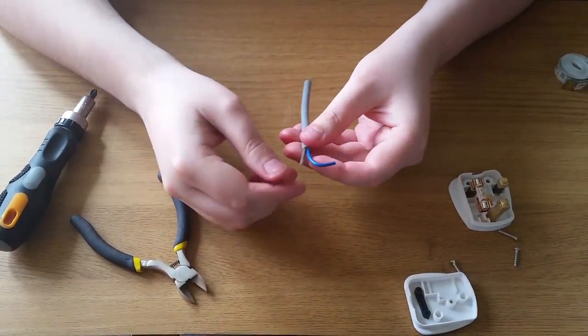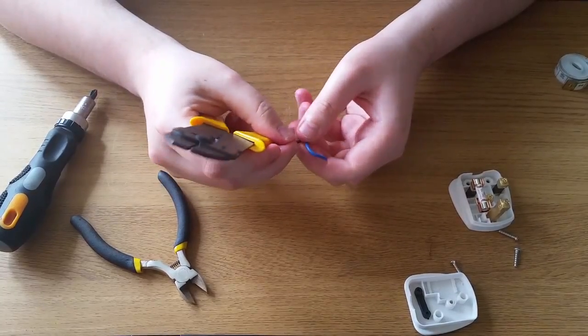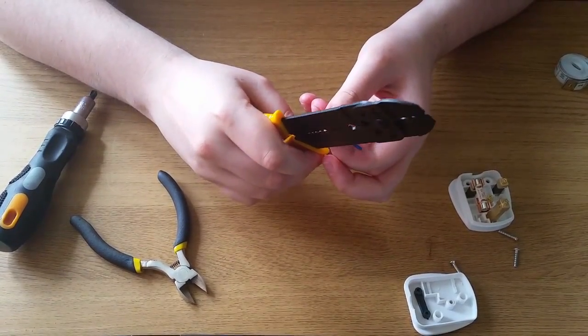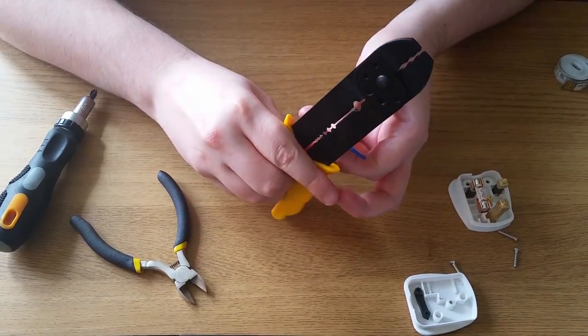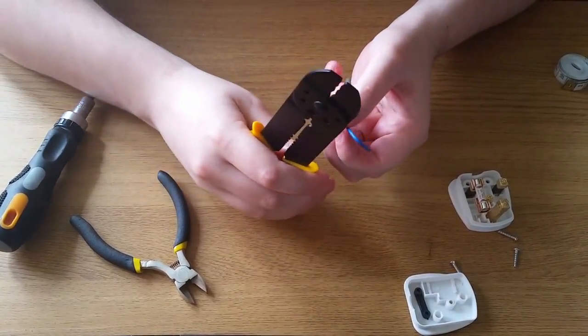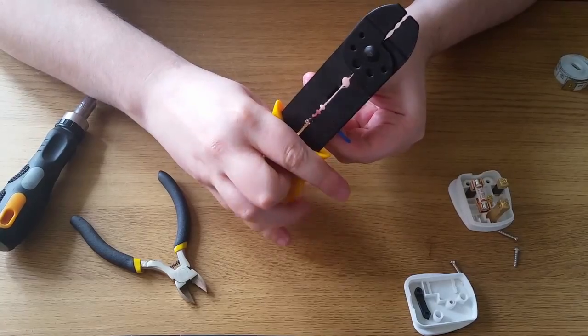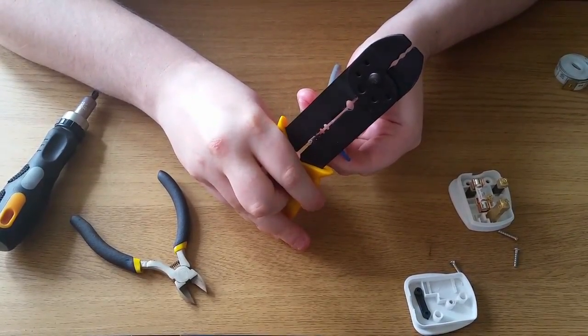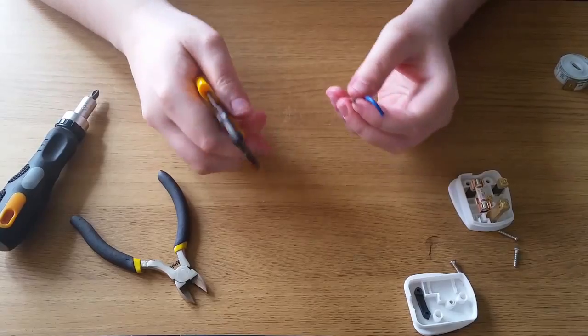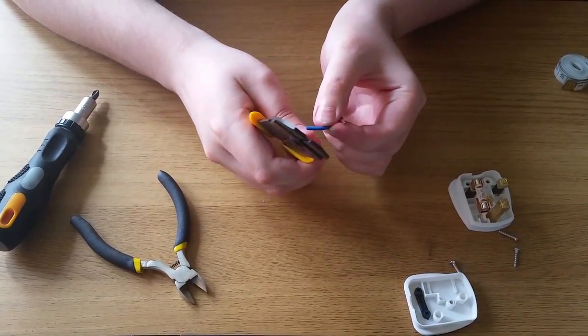Once you're happy with the length of each wire, you can now strip the wire back, exposing the copper. Here I'm just selecting the right size gauge for the wire. And with a twist and pull, the shielding just pops off. As you can see, fairly gripping onto the wire. Giving it a little twist and it should just pull off. I'll do the same for each other wire as well.